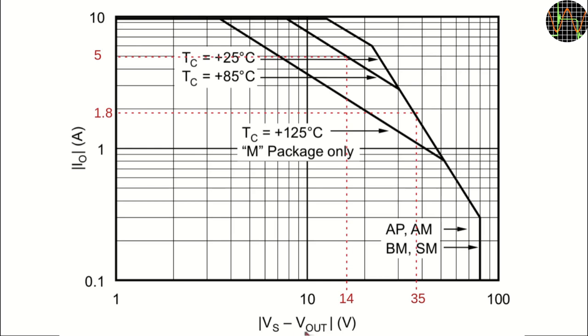Vs minus Vout is the voltage drop across the regulator. If it is high, meaning Vout is low and Vs is high, then the regulator, or the amp in this case, has to convert all that extra voltage into heat which means it can handle only very small currents. I have drawn in red the case for Vs minus Vout equals 35V, which at 35V supply voltage means Vout is zero or a short to ground. In that case 1.8A is the maximum allowed continuously. If on the other hand the voltage drop is only about 14V, it can handle 5A, assuming a case temperature of 85C.